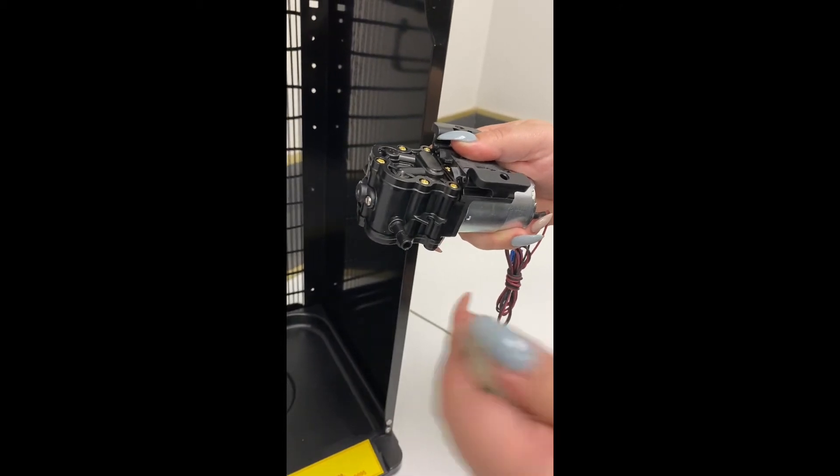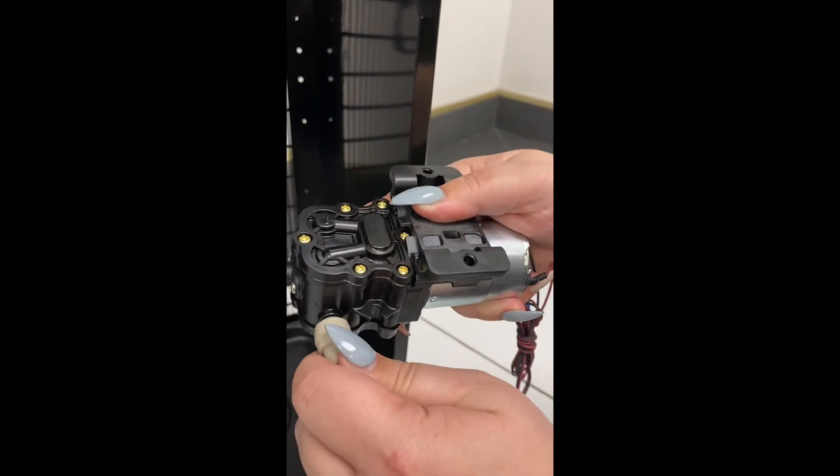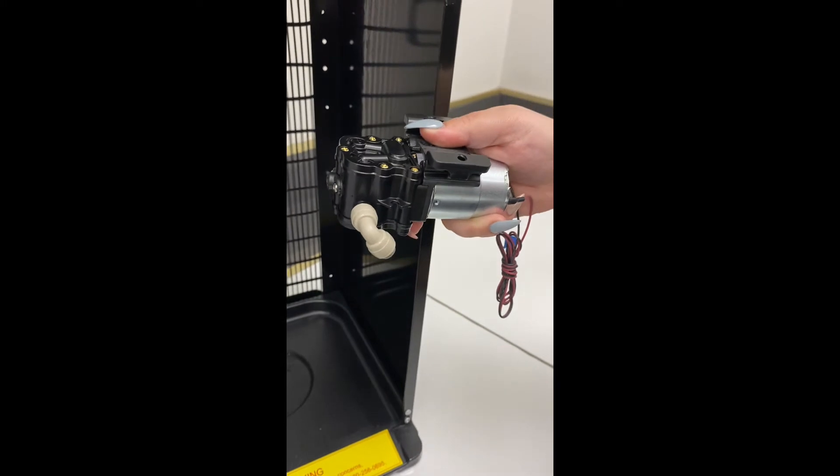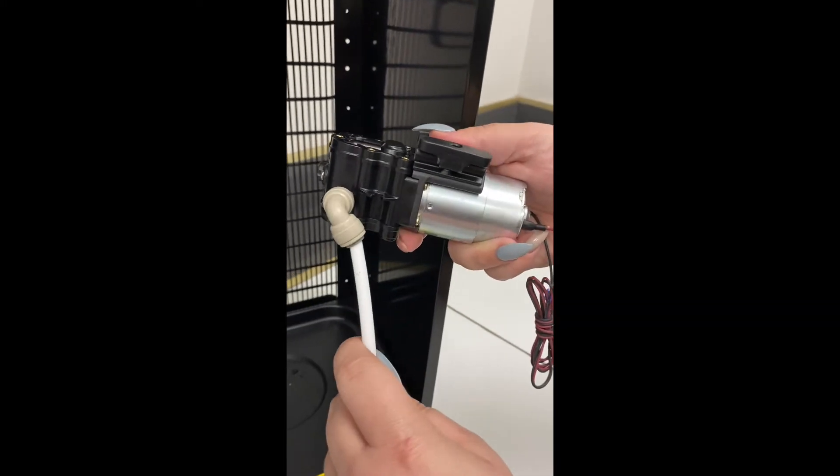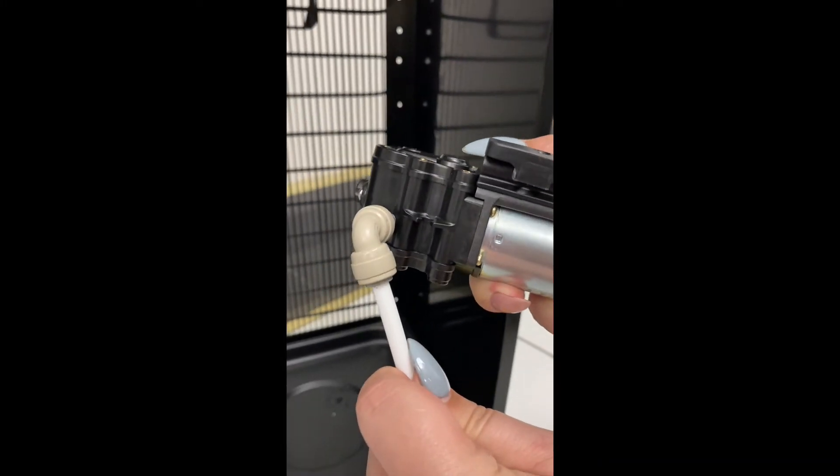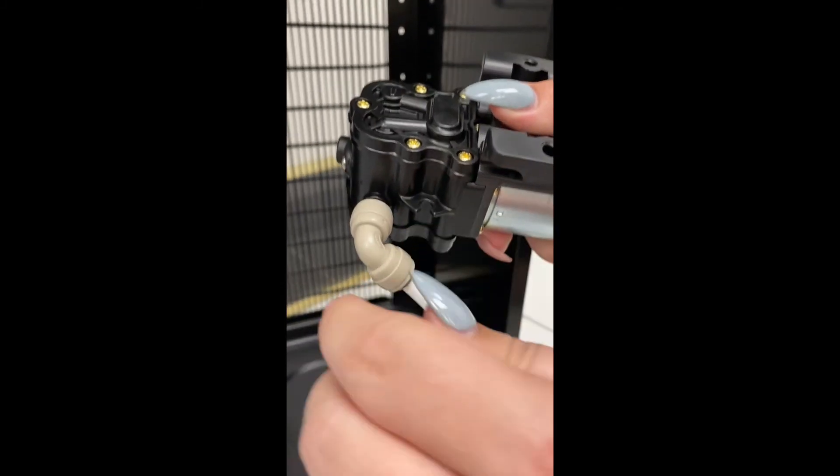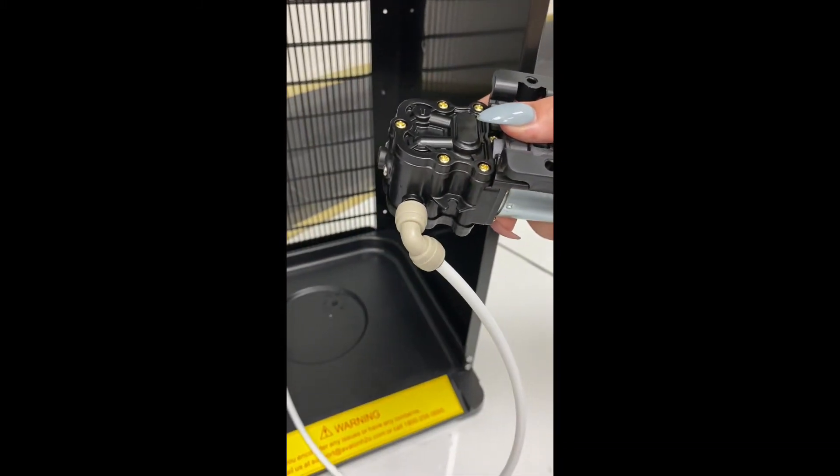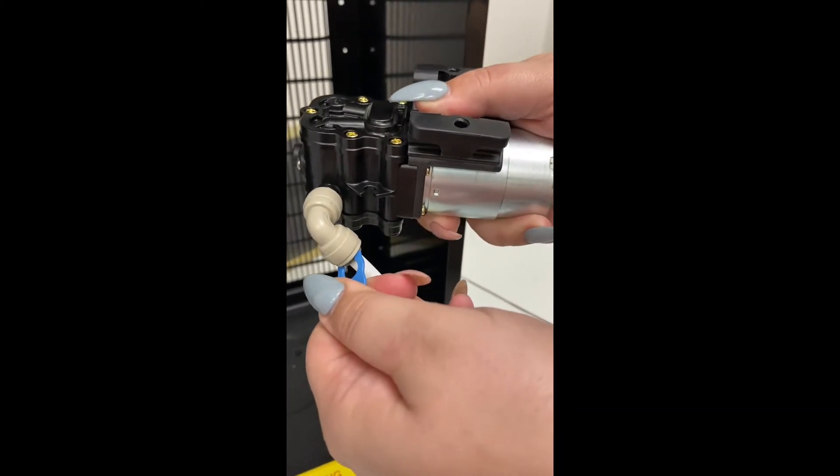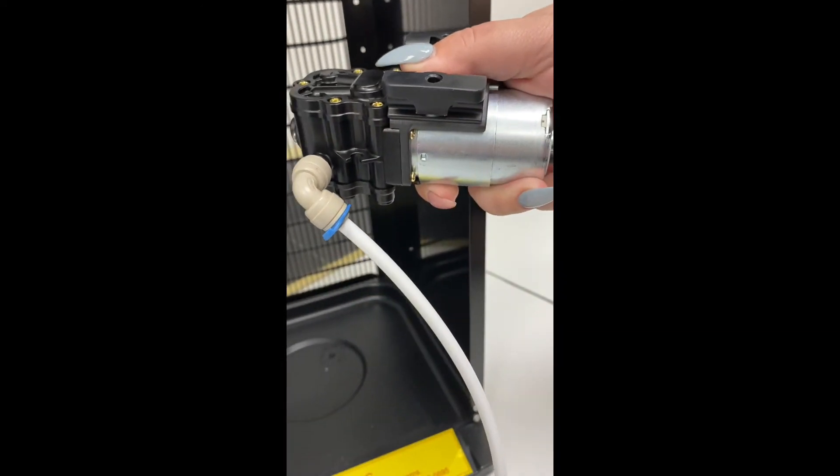Now we're going to take that new connection, push this into place, take the white tube, and push it in. Make sure it goes in all the way, and make sure that this one back here is pushed back all the way. Then you're going to take those blue clips and put those back on to help lock those connections in place.